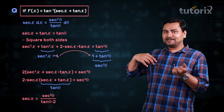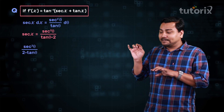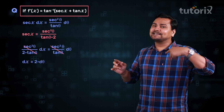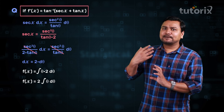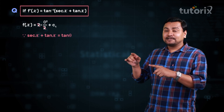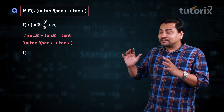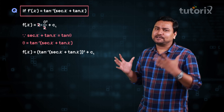Substituting secant x into the dx equation, secant² θ / (2 tan θ) times dx equals secant² θ / tan θ times dθ. Cancelling secant² θ / tan θ from both sides gives dx equals 2 dθ. So our integral becomes the integral of θ times 2 dθ, and 2 times the integral of θ with respect to θ is 2 times θ²/2, which simplifies to θ². Substituting back, θ equals tan inverse of (secant x plus tan x), so f(x) equals [tan inverse (secant x plus tan x)]² plus constant c₁.